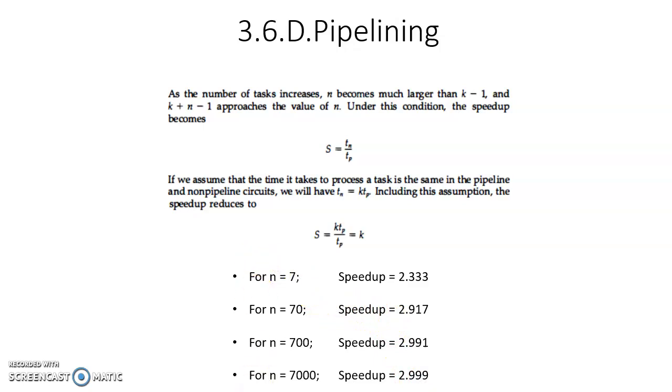So from these examples you can see, as the number of tasks increase, n becomes much larger than k - 1, and k + n - 1 approaches the value of n. Under this condition, speedup is equal to tn / tp, where tn is equal to k * tp. tp cancels, so s equals k. What is k? Number of segments. So speedup that could be obtained with the help of pipeline technique is k, k number of times.